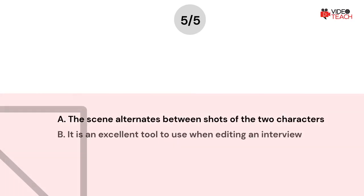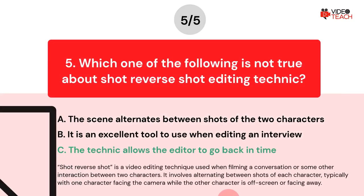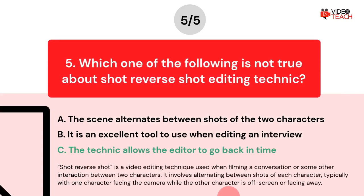The correct answer is option C. Shot reverse shot is a video editing technique used when filming a conversation or some other interaction between two characters. It involves alternating between shots of each character, typically with one character facing the camera while the other character is off screen or facing away.